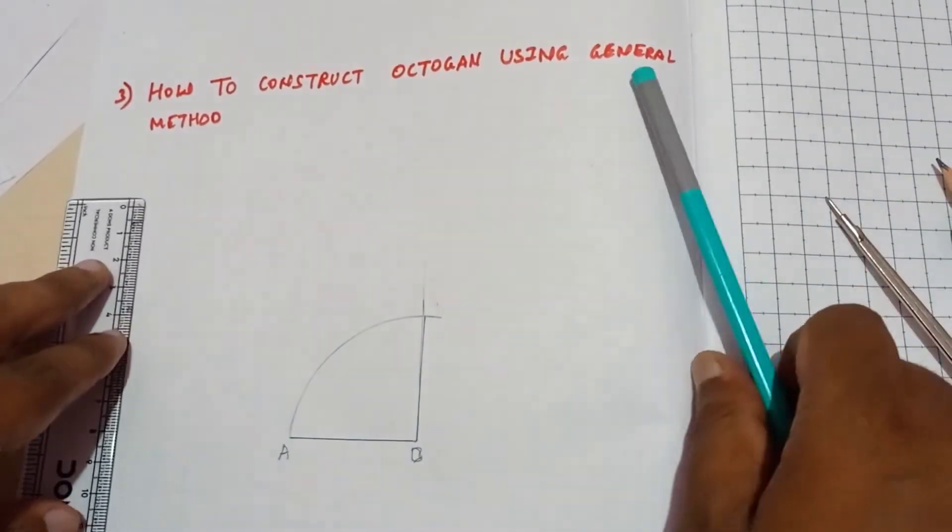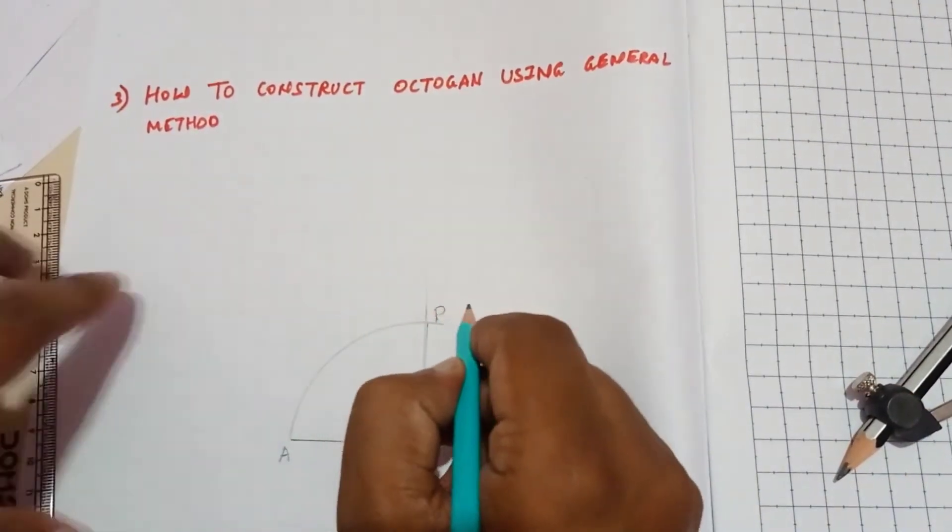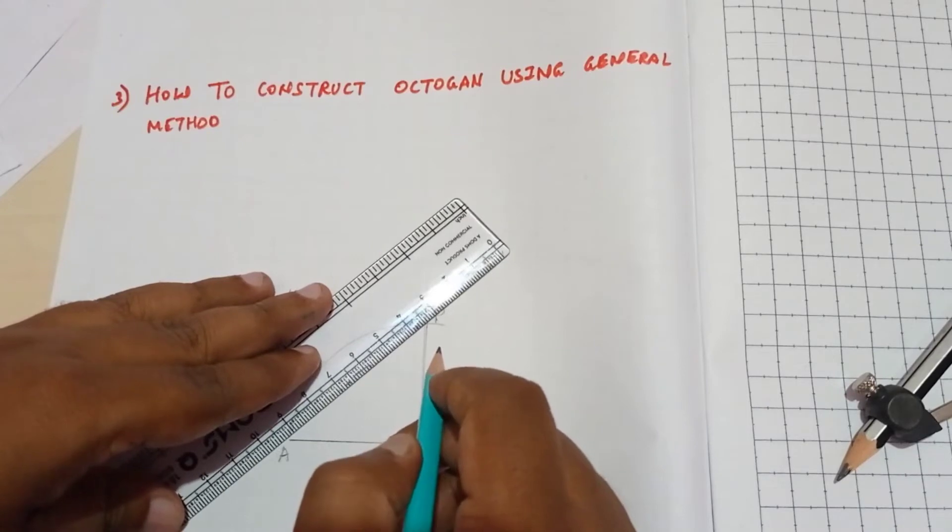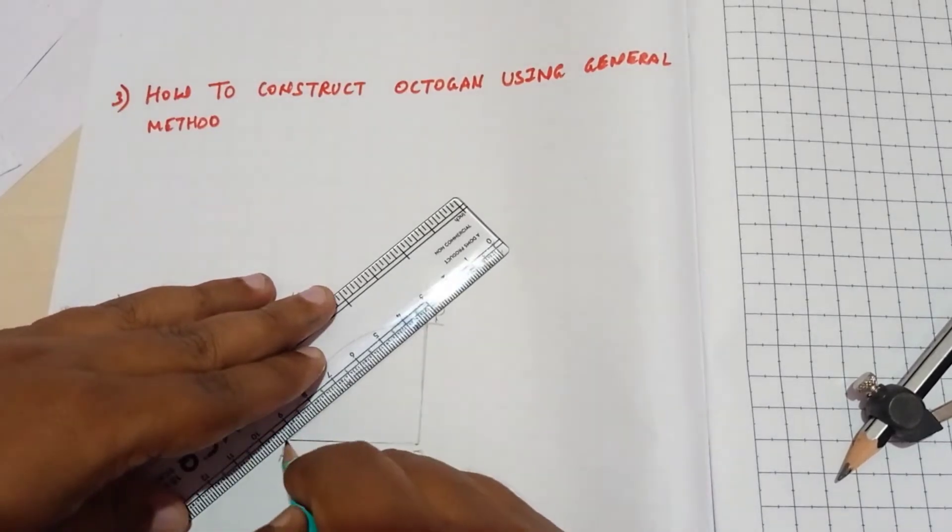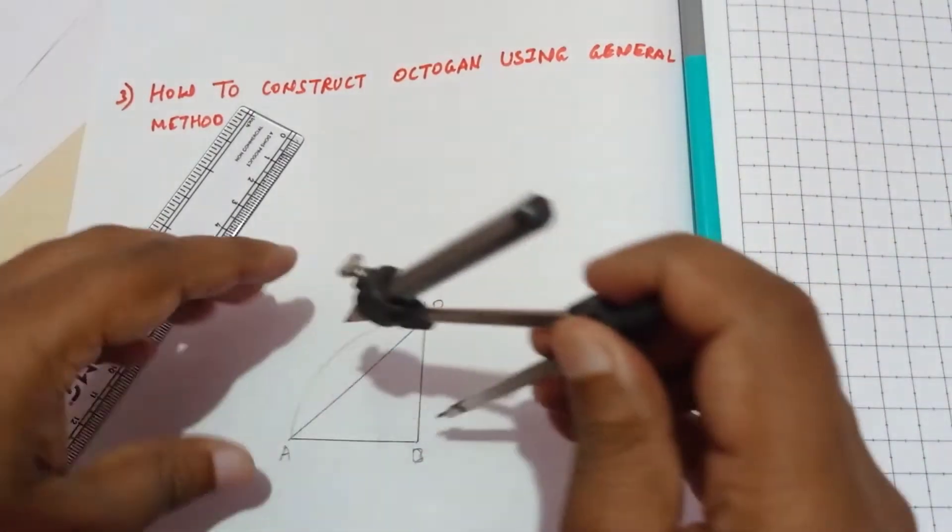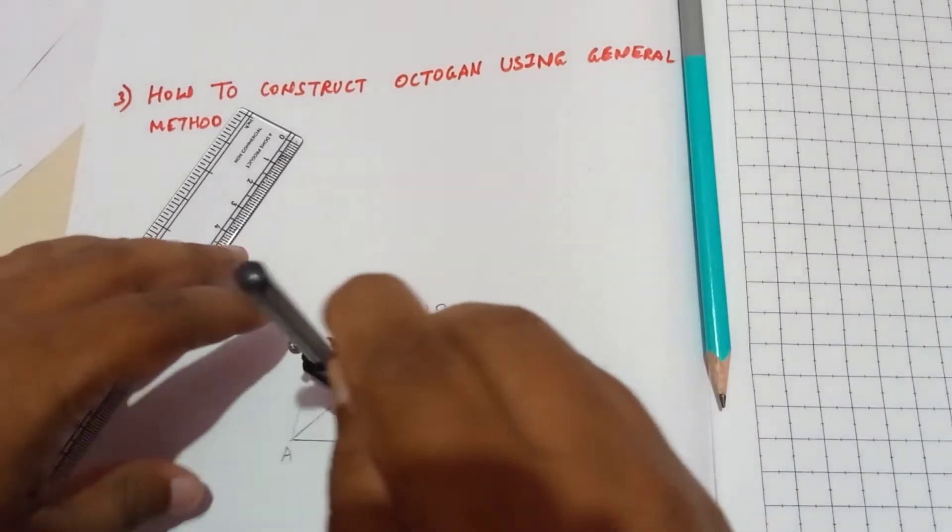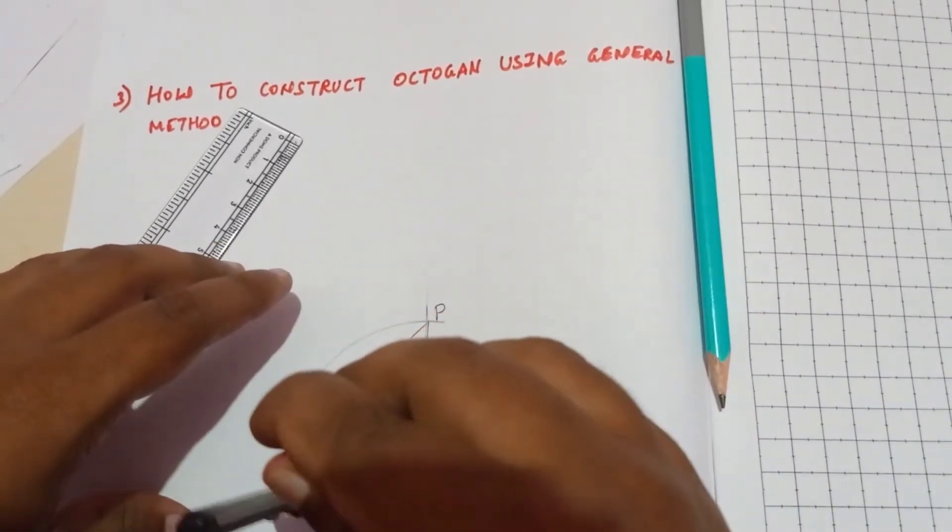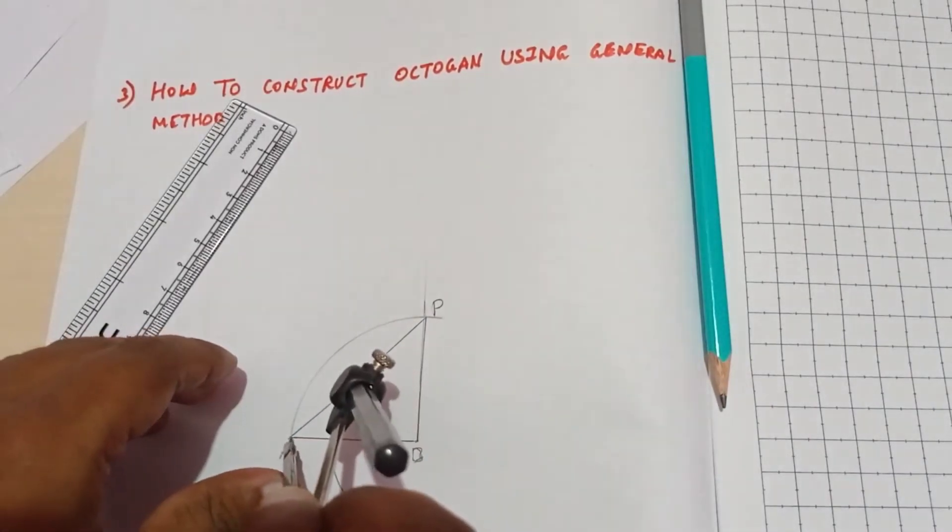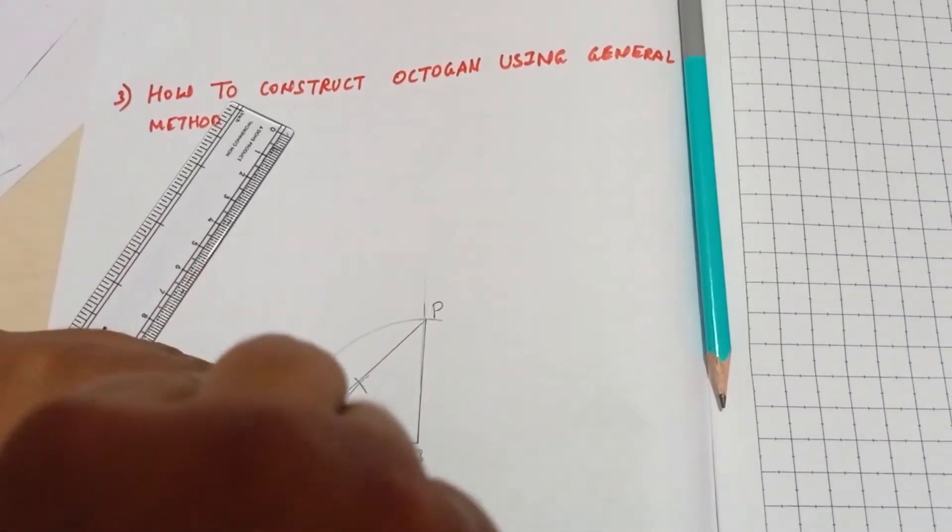Now we need to join - this is the point we're getting, this is B. Join point P and A. Now bisect the line AB. To bisect the line, take more than half the distance and cut two arcs from this point. Same way you can cut it from here and here.